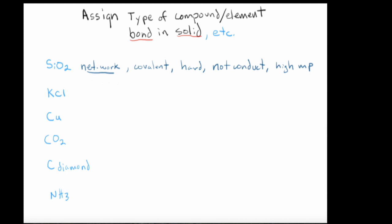Next substance is KCl. We have a metal paired with a non-metal, so it should be clear-cut — this is an ionic compound with an ionic bond. These ionic compounds are all crystalline solids at room temperature. Most of them are white, they're hard, they're brittle — you smash them with a hammer and they'll break into pieces.